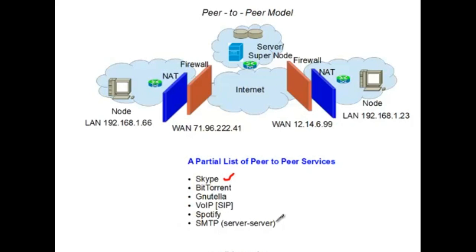Finally, SMTP — the mail transfer protocol — while it is a client-server protocol from the client or host machine up to the mail server, between mail servers it acts as peer-to-peer. It operates on a public network rather than a private network, so it does not have the same NAT and firewall issues mentioned earlier.